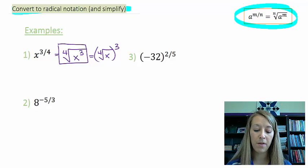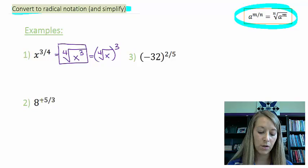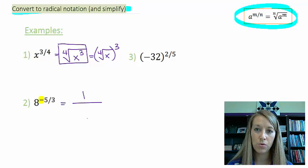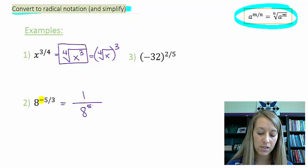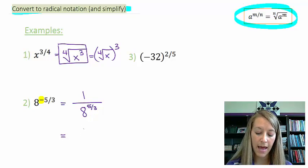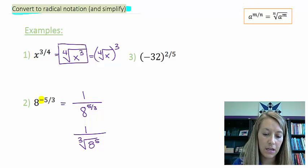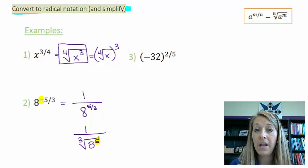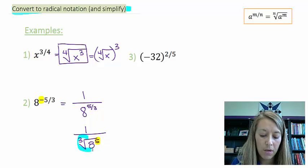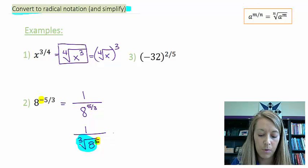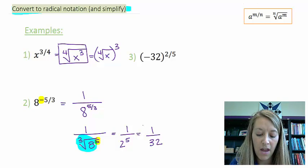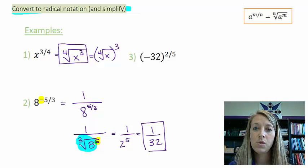Example two: before dealing with the five-thirds power, I need to handle the negative exponent. A negative exponent changes it to the other side of the fraction, so this becomes one over eight to the five-thirds. I rewrite that as one over the third root of eight to the fifth power. I'll take the cube root of eight first, which is 2, giving one over two to the fifth power. Two to the fifth is 32, so the final answer is one over 32.